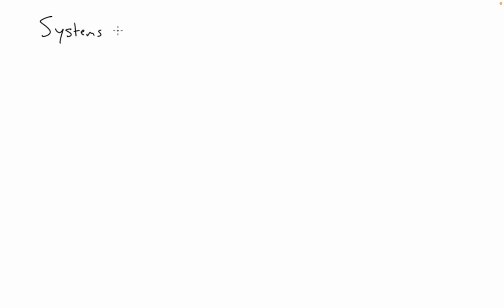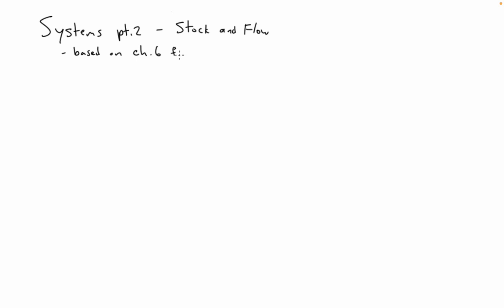This is the second lecture on systems, and we're going to talk about stock and flow in more detail — understanding the different components of the stock and flow diagram and how we can use these diagrams to approach, characterize, and ultimately model the system. This is based on a reading: chapter six from Reuter, called 'Diagnosing and Engaging with Complex Environmental Problems.'